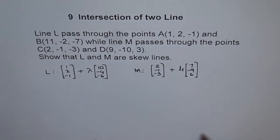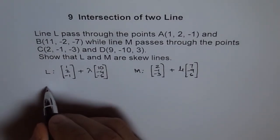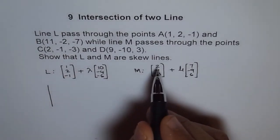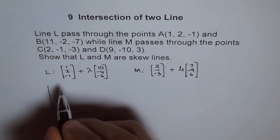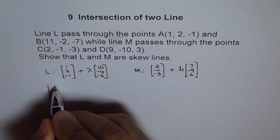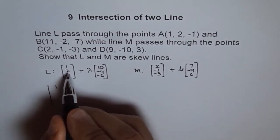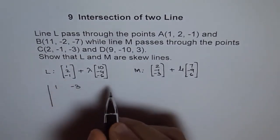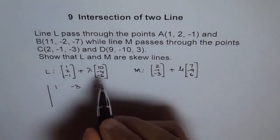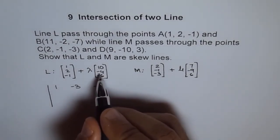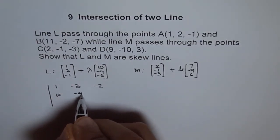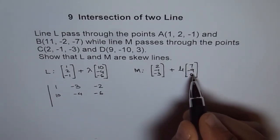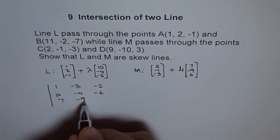So these are our two lines, and for skew lines we compute the scalar triple product. The first row is the vector from A to C: (2-1, -1-2, -3-(-1)) = (1, -3, -2). The second row is the direction of L: (10, -4, -6), and the third row is the direction of M: (7, -9, 6).